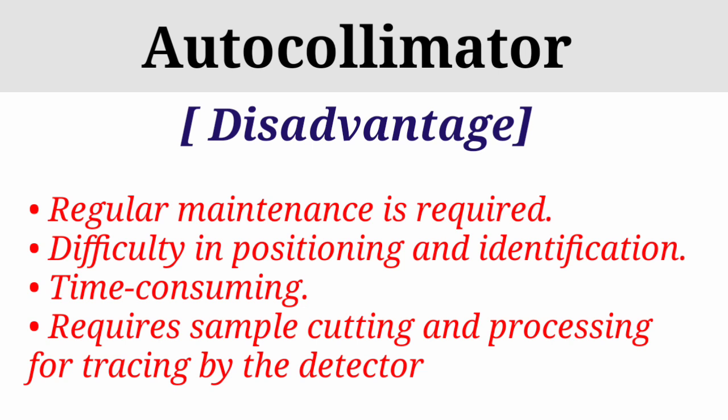यही होते हैं autocollimator के advantages। अब disadvantages: mirror, detector, reflector की positioning और identification करने में थोड़ी difficulty आती है। Then time consuming — जब आप इसका setup करते हैं तो उसमें time लगता है। And the last one: it requires sample cutting and processing for tracing by the detector — detector द्वारा tracing के लिए नमूने की cutting और processing की ज़रूरत पड़ती है। यही होते हैं autocollimator के disadvantages।